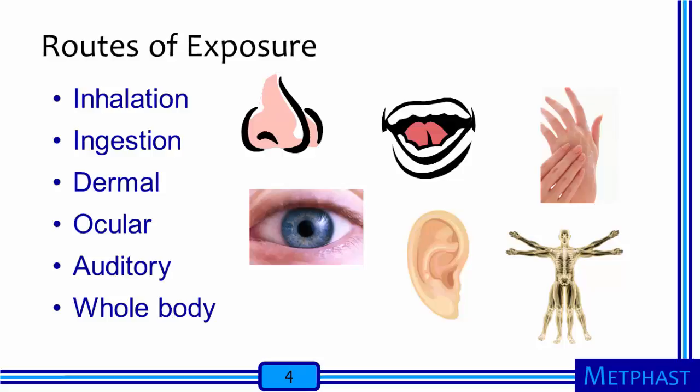People at work can be exposed to hazards by a variety of routes. We think of inhalation exposures most often. However, there is also a potential for ingestion exposures, especially from materials that first deposit in the respiratory tract and then are brought up through the mucociliary escalator and swallowed. During this lesson, we'll be focusing on dermal exposures — exposures to the skin. There are also ocular exposures to the eye, auditory exposures to elevated sound levels, and whole body exposures to hazards like radiation and vibration.